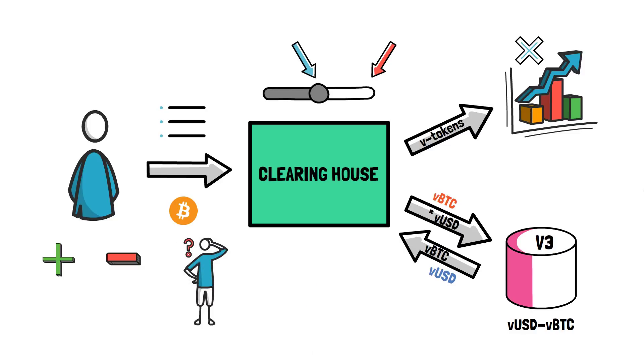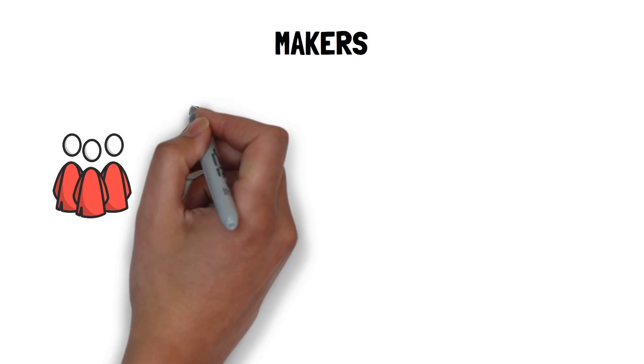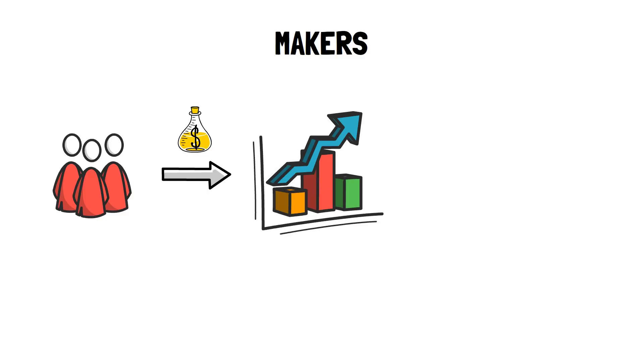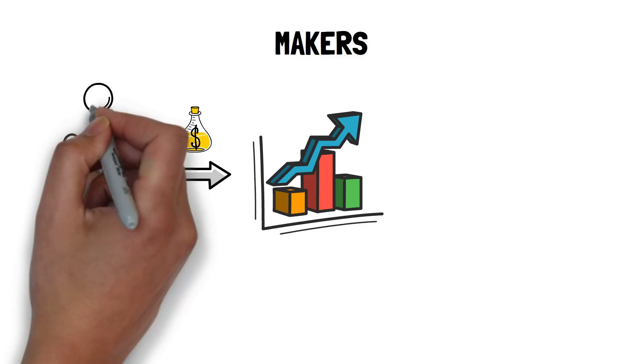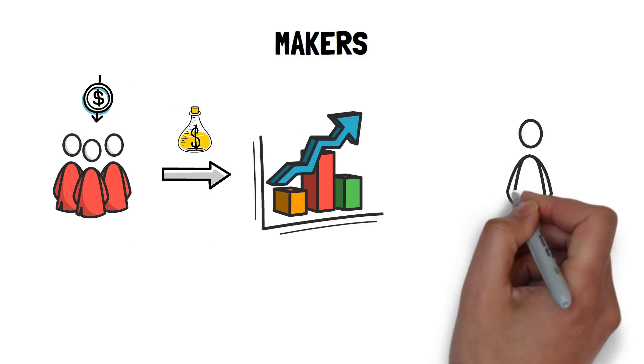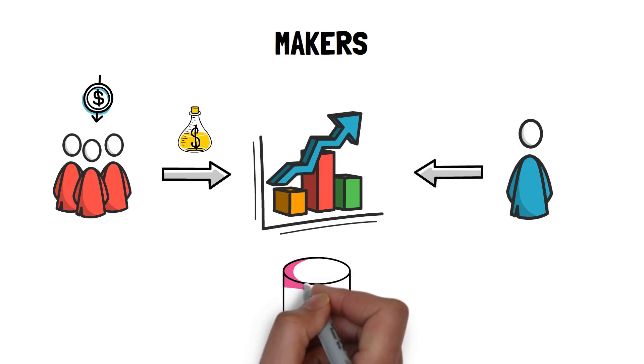On top of being used by traders, the Clearinghouse contract is used by makers. In perpetual, makers are market participants that provide liquidity to the perpetual futures exchange. By doing so, makers make money by accruing trading fees, whenever someone trades against the pool where they provide liquidity. Makers can also use leverage when providing liquidity.